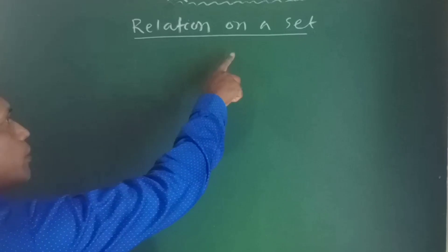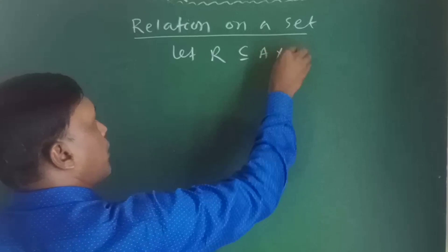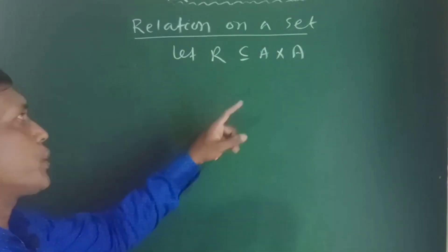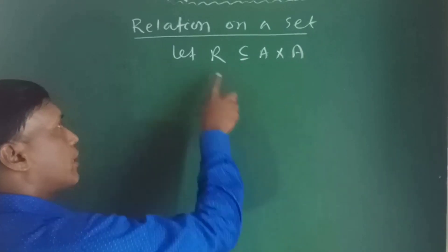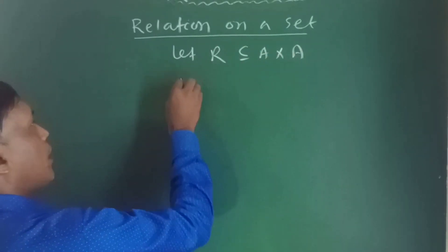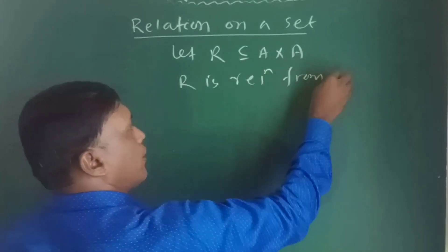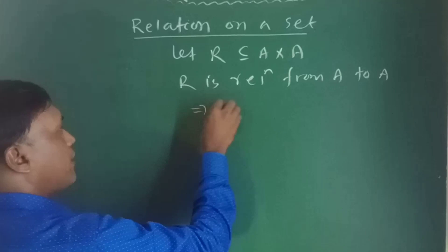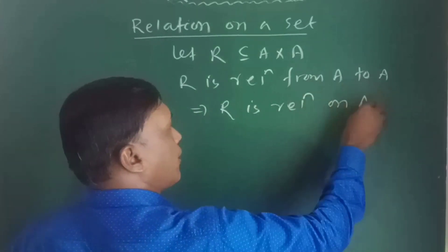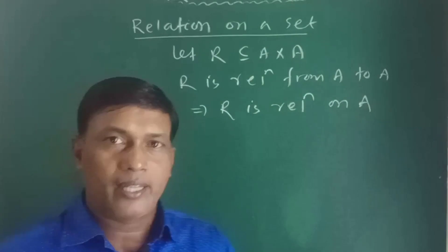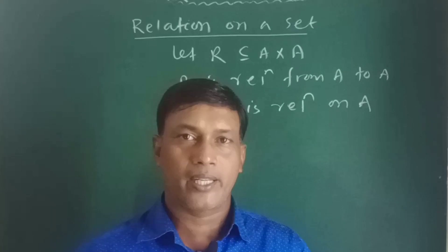Now, a relation on a set: if R is a subset of A×A, that means R is a relation from A to A, which is known as a relation on A. When a relation is from a set to itself, it is called a relation on a set.